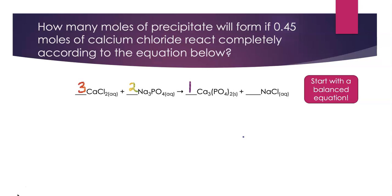That gives me a coefficient of one for the calcium phosphate, which is the solid. And then I see there are six chlorines on the left and six sodiums on the left. So I need a coefficient of six in front of NaCl. So now that I've got my equation balanced, I can go on and do the rest of the problem.